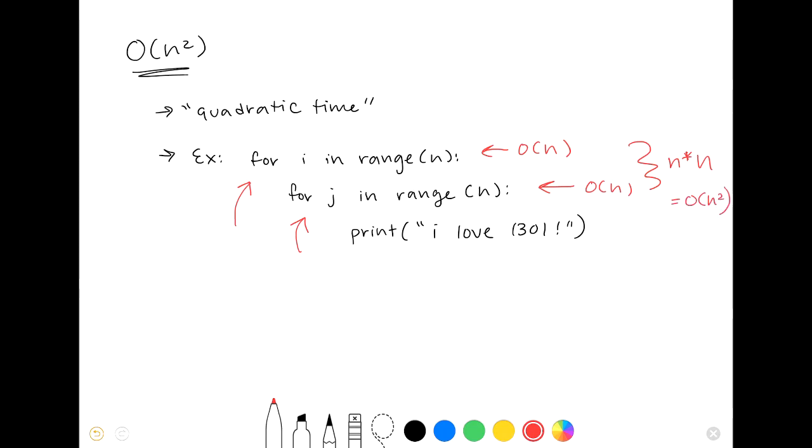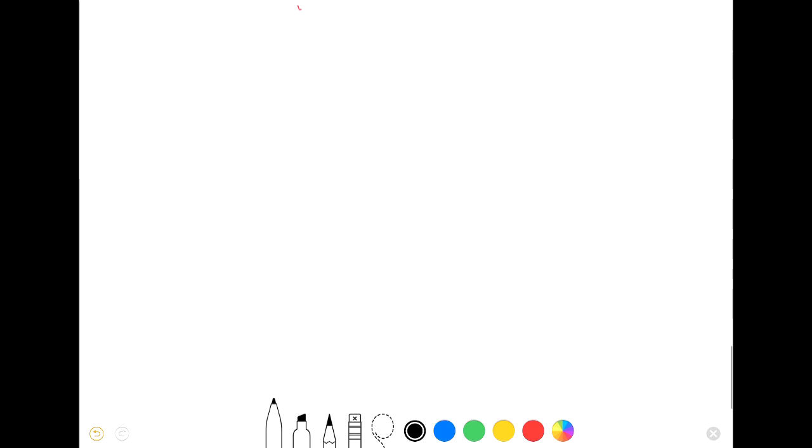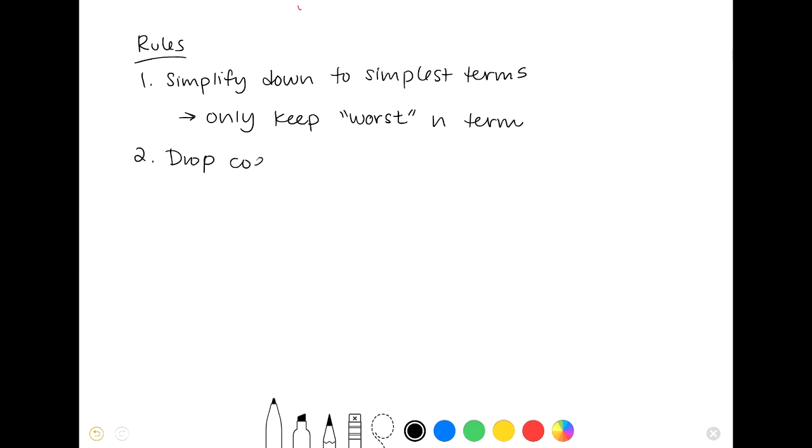And before we get to some examples, we have a couple important rules to make sure to remember while you're writing Big O. While we are determining the Big O of some code, we want to simplify our complexities down to the simplest terms. This means that we only want to keep the largest term, which is considered our worst case, and we want to drop any coefficients that we may have. A good way to check your work is to make sure that the Big O you end up with is as generic as possible and that your answer is of a similar format to one of the common Big O types we discussed earlier.